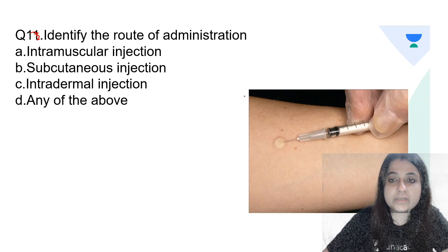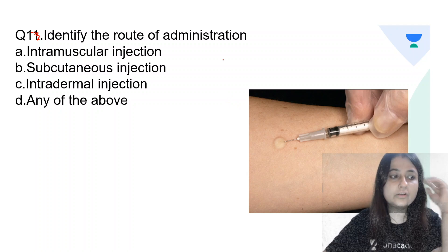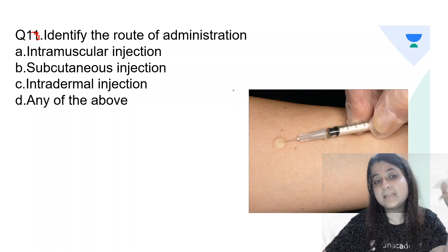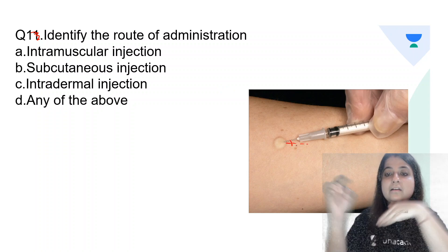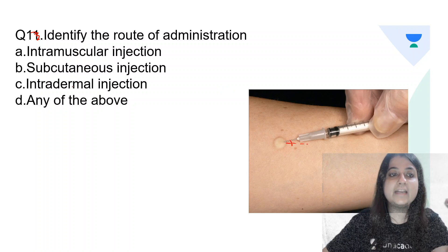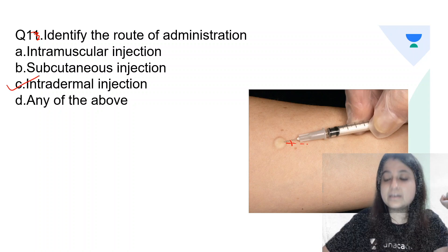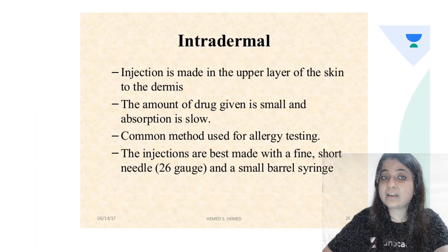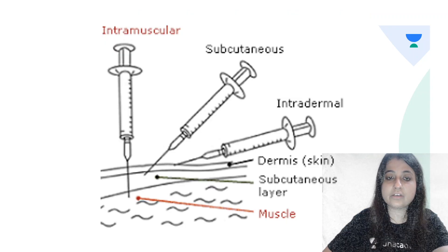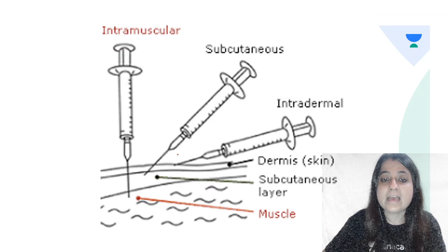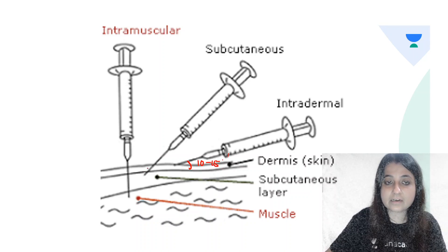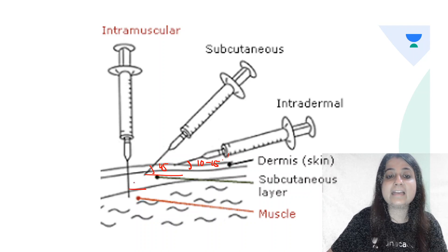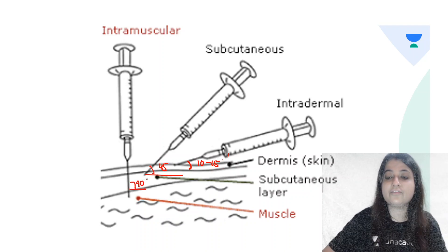Identify the route of administration. Is it intramuscular, subcutaneous, intradermal, or any of the above? You can see this is absolutely parallel, almost at an angle of 10 to 15 degrees. So this is intradermal injection. Intradermal injection is made in the upper layer of the skin, to the dermis. When it is given parallel, 10 to 15 degrees — intradermal. Subcutaneous is given at an angle of 45 degrees and intramuscular is at 90 degrees.